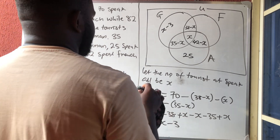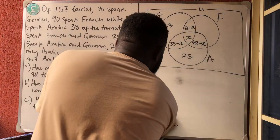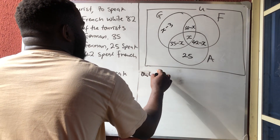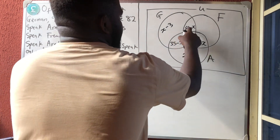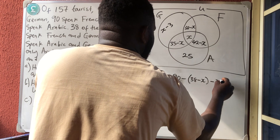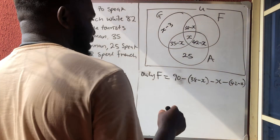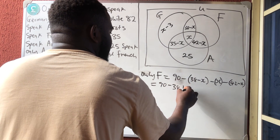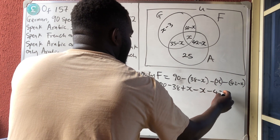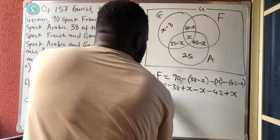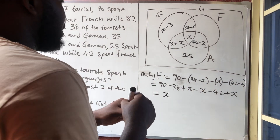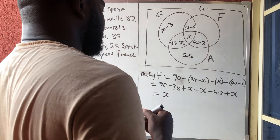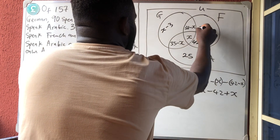They said 90 speak French without 'only', so only French equals 90 minus everything that entered French: 90 minus (38 minus x) minus (42 minus x). Opening the brackets and collecting terms: x cancels to give x, and 90 minus 42 is 48, minus 38 gives 10. So only French is x plus 10.